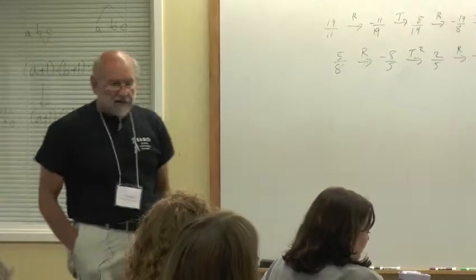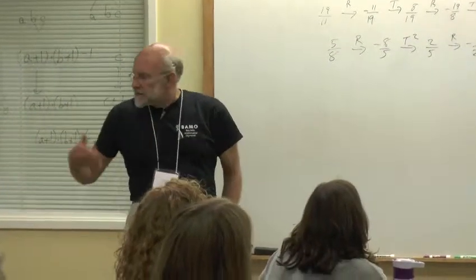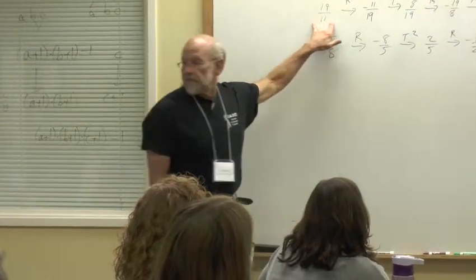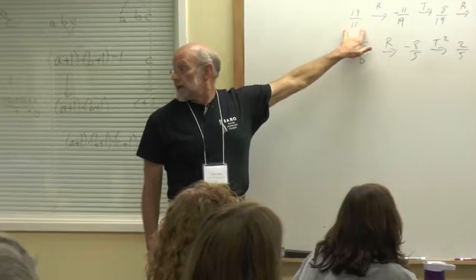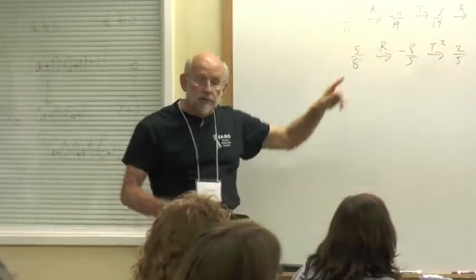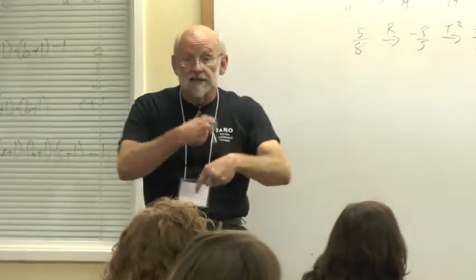So, I'd like to have a proof, a convincing argument, that no matter what kind of a horrible fraction I have here, that I can find a sequence of twists and rotates that'll get it back to zero.